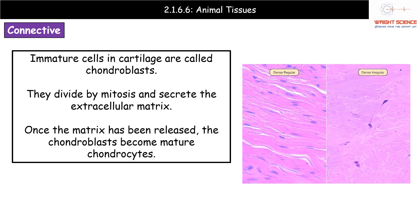In cartilage, we have immature cells called chondroblasts, which divide by mitosis to produce genetically identical daughter cells and secrete the extracellular matrix. Once that matrix has been released, the chondroblasts become mature chondrocytes. So the chondroblast is the immature version, the chondrocyte is the mature version, and the key distinction is that the chondroblasts have secreted the extracellular matrix.